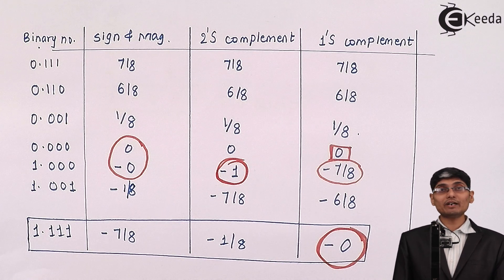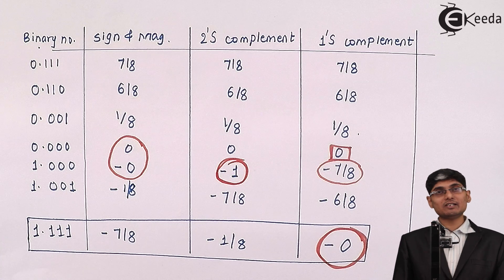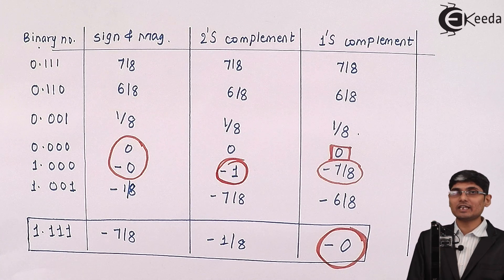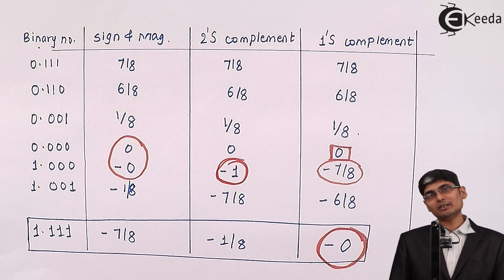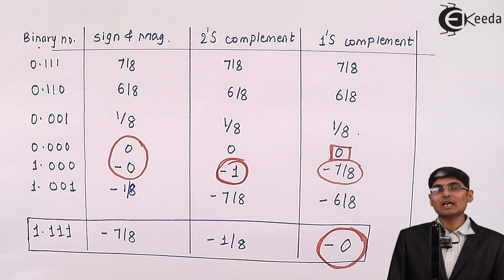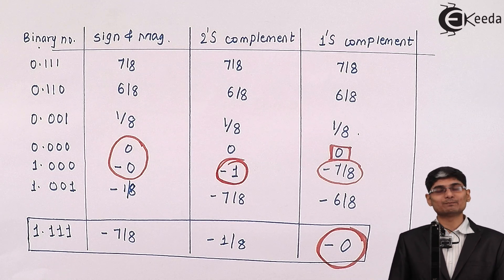I hope you have understood the three basic ways to represent a negative number, and what two's complement, one's complement, and sign and magnitude number systems are. Thank you.